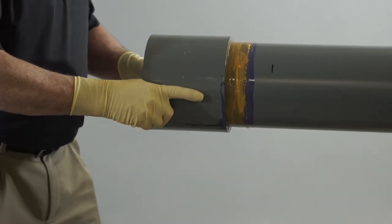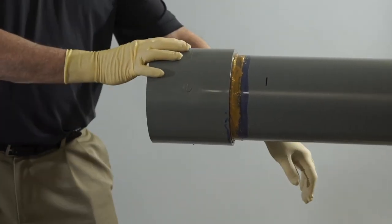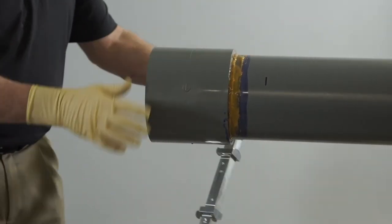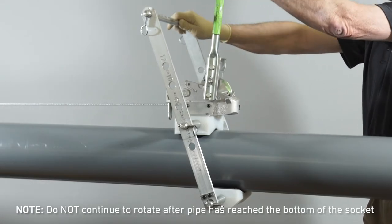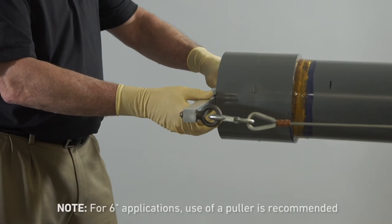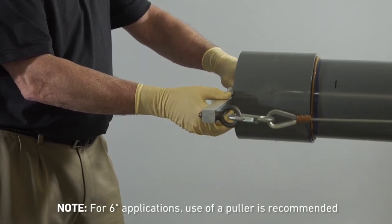Immediately while the solvent cement is still wet, insert the pipe into the fitting socket with one smooth insertion action. If utilizing a pipe puller, ratchet the pipe puller until reaching the bottom of the socket. Hold the pipe and fitting together for a minimum of 30 seconds to avoid the pipe from pushing out.